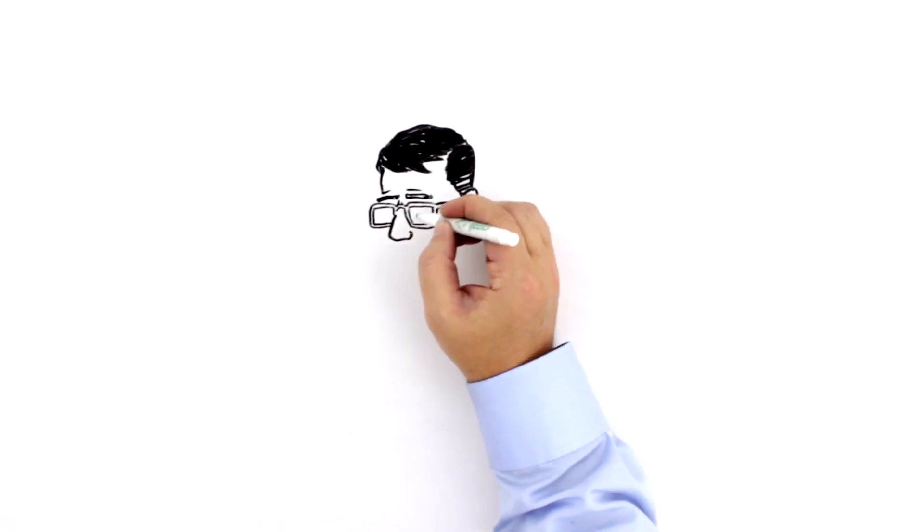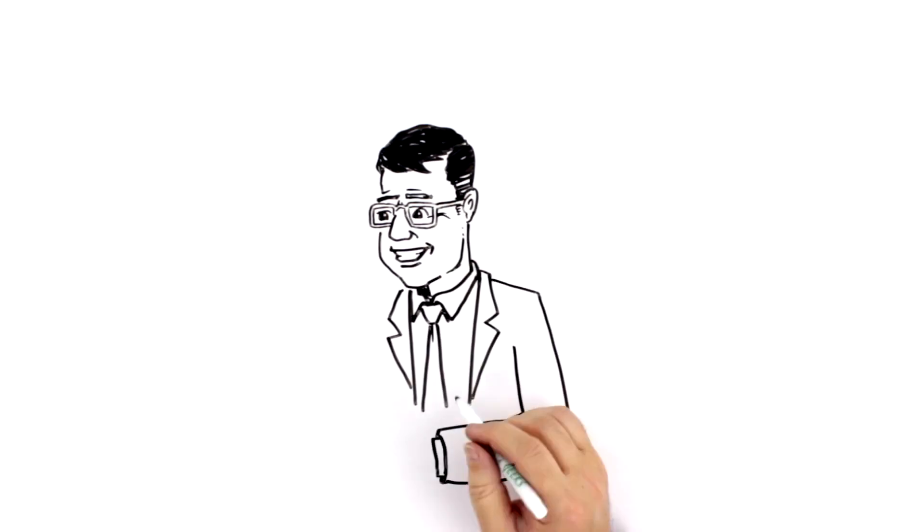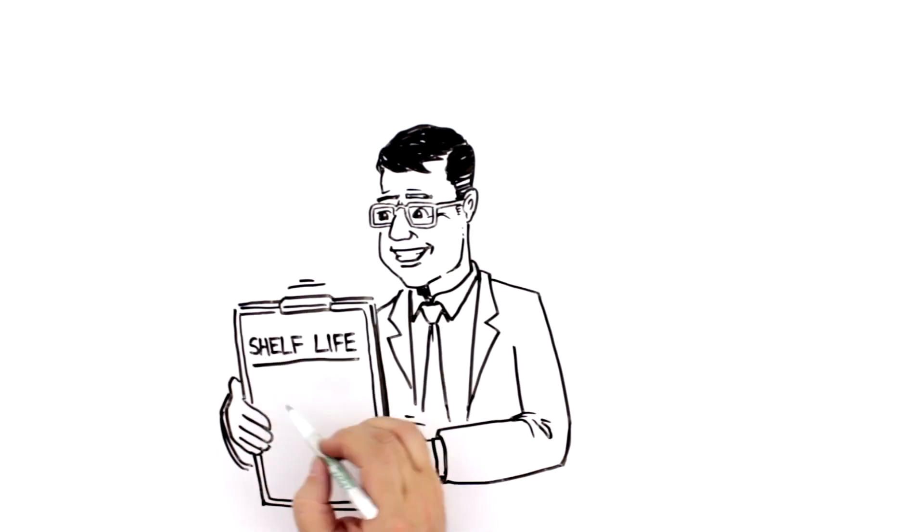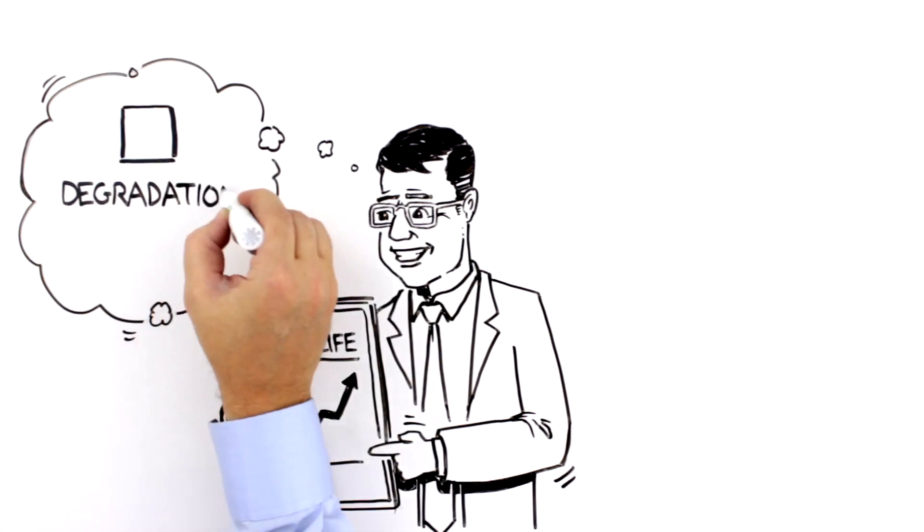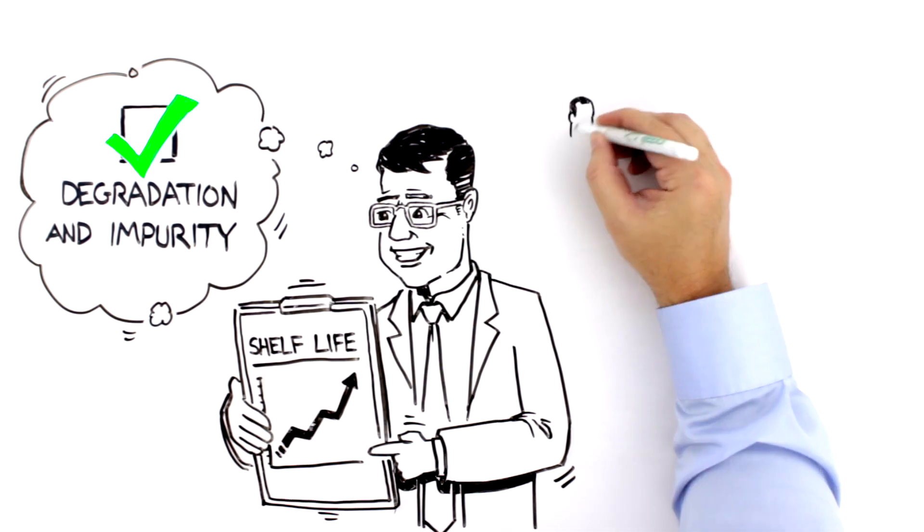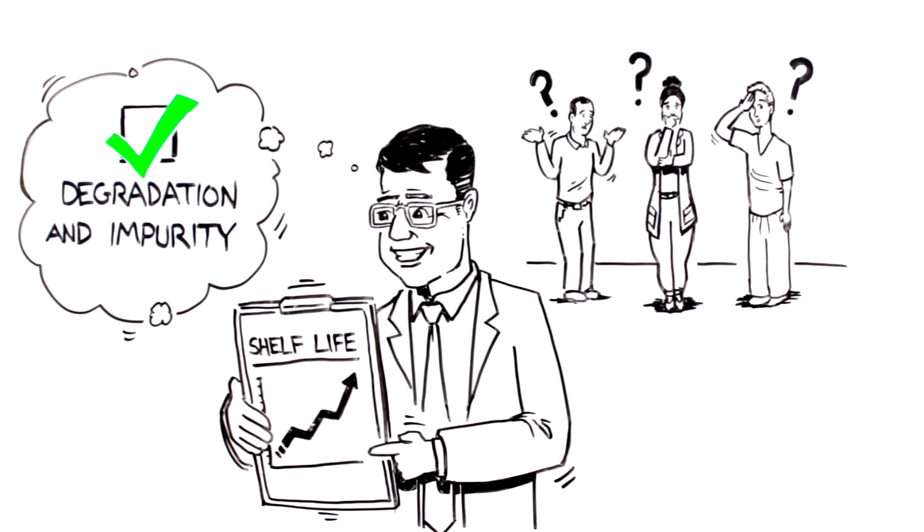This is Mayank, a quality control manager. His job is to find ways to optimize shelf life in his company's product. He's looking for an instrument that will determine levels of degradation and impurity but it has to be easy for his staff to use.